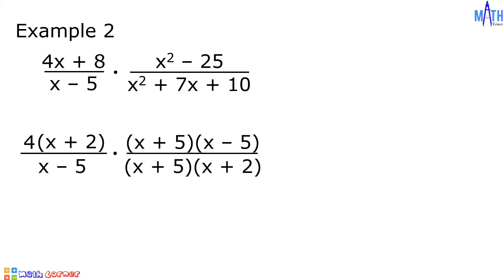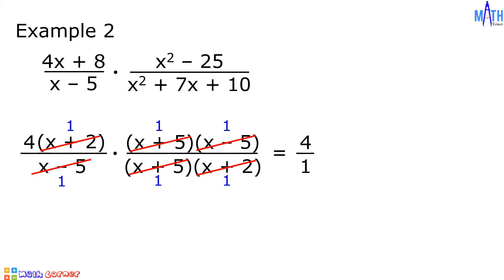Let us cancel out common factors. We can cancel out x plus 2, cancel out x plus 5, and cancel out x minus 5. Let us multiply the remaining factors: 4 times 1 times 1 times 1 is equal to 4, over 1 times 1 times 1 is equal to 1. 4 over 1 is equal to 4. And this is the answer.